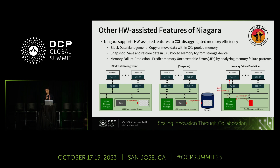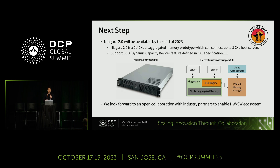Apart from the research items introduced here, we are exploring various other hardware-assisted features, and we are always open to collaboration. Our next step is preparing Niagara 2.0, available by end of this year. Niagara 2.0 is a 2U-based CXL disaggregated memory prototype that can connect up to eight host servers, and we plan to support the DCD feature described in the CXL specification. We are very much looking for collaboration with industry partners to enable the CXL hardware-assisted ecosystem.